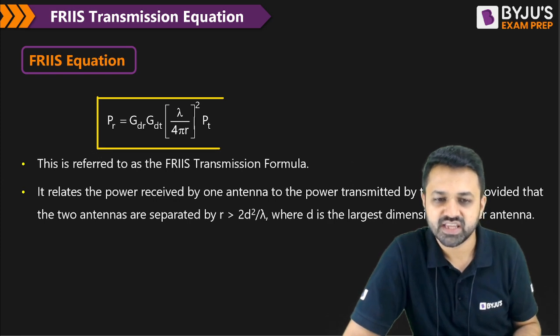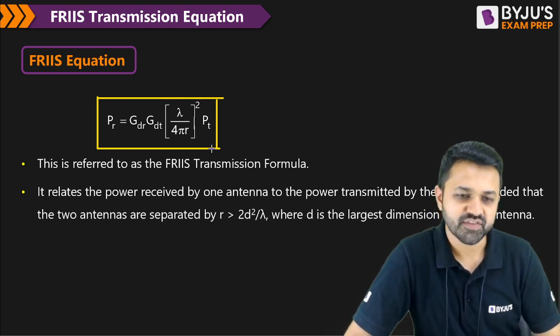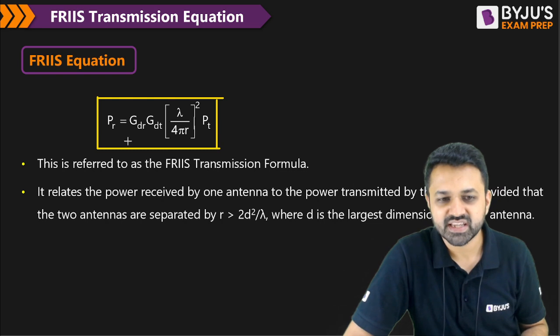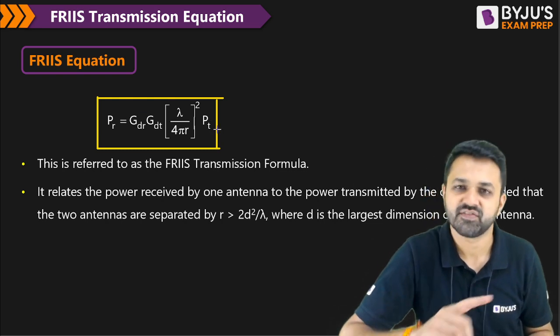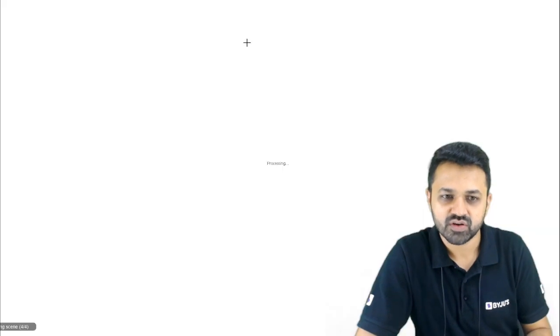Then what will be the received power equation? That is the received power equation when everything is matched. Everything is matched means there is a polarization match, there is a matching between the transmission line and input impedance of the antenna. If there is a perfect match, then you will get the received power as this equation that we have already derived in the previous Trichopedia session.